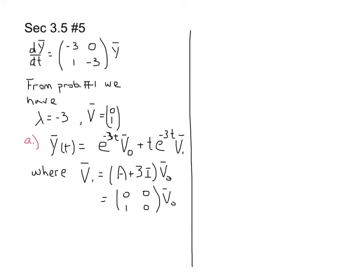Now, in part B, we're given that the initial condition is, in number 5, the initial condition is 1, 0. And so, we're asked to write the particular solution, and so in this case, I'll compute my v1 first.